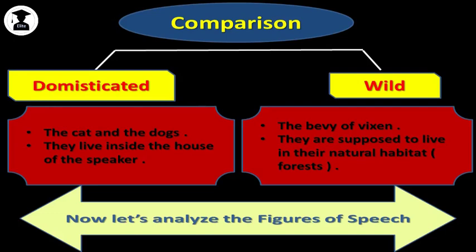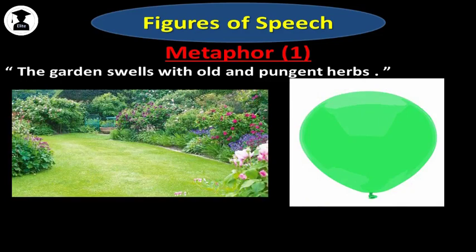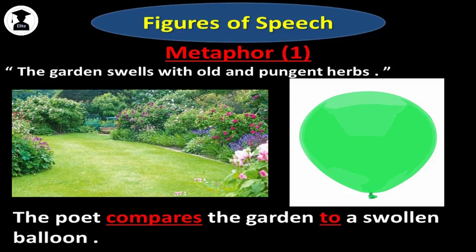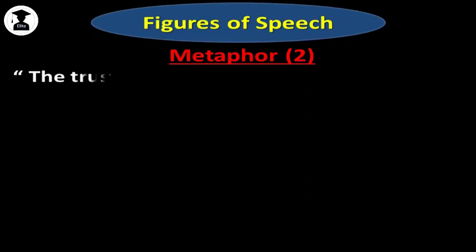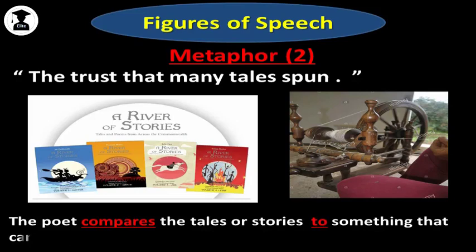Let's move now to the figures of speech found in this poem. The first figure of speech is a metaphor. Do you remember what is a metaphor? It is a comparison between two unlike things without using as or like. In the line 'the garden swells with old and pungent turfs,' this is a metaphor because the poet compares the garden to a swollen balloon. The second figure of speech is also a metaphor found in the line 'the trust that many tales spun.' The poet here compares the tales or stories to something that can spin or revolve around another thing.